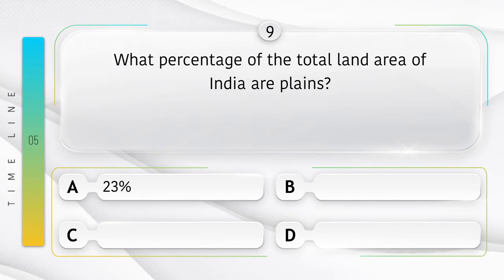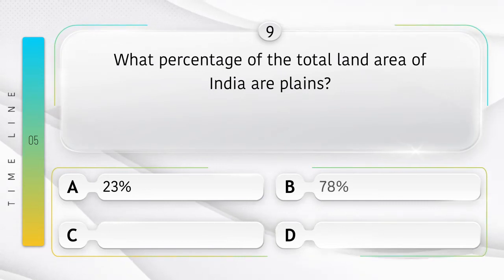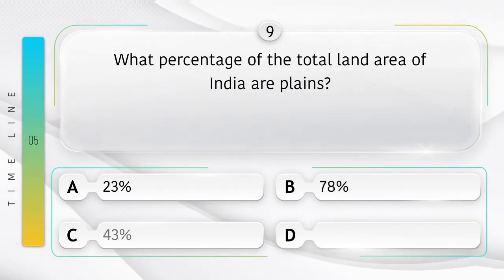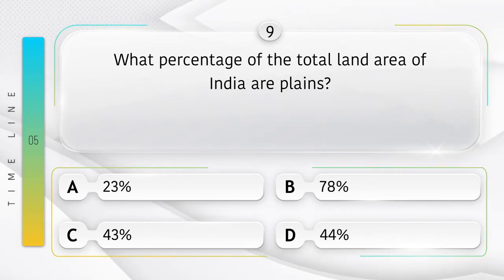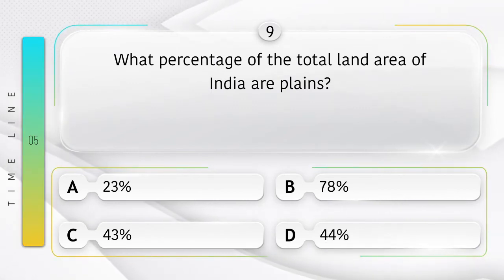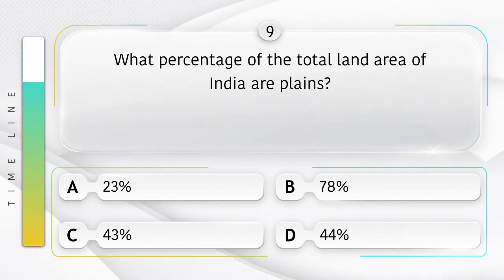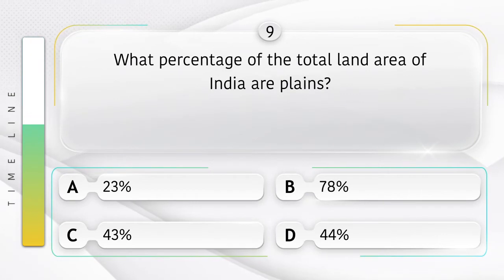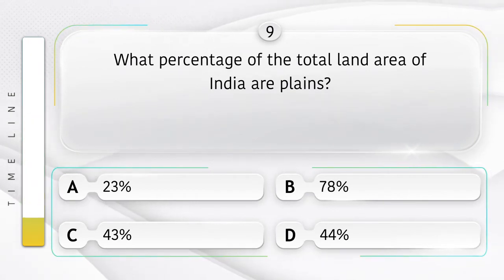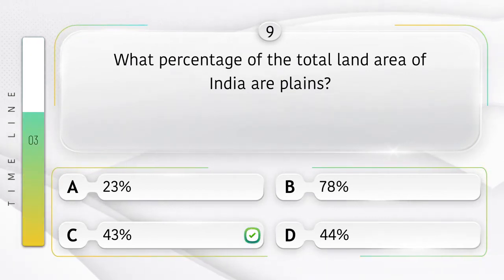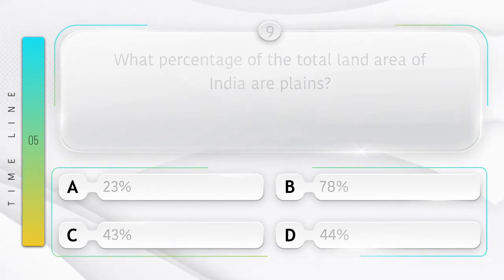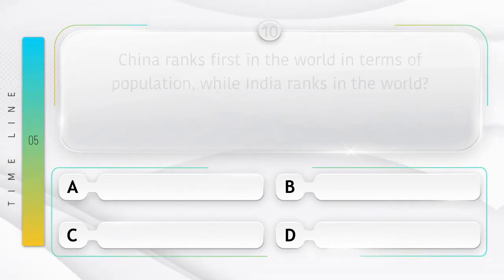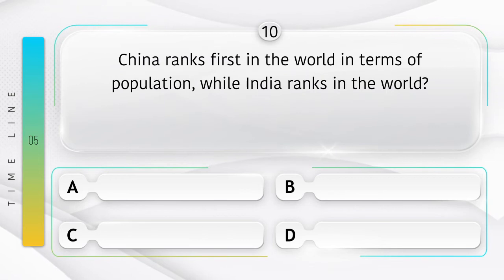What percentage of the total land area of India are plains? Option A: 23%, B: 78%, C: 43%, D: 44%. Answer is option C: 43%.